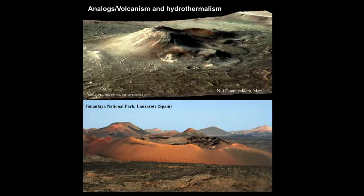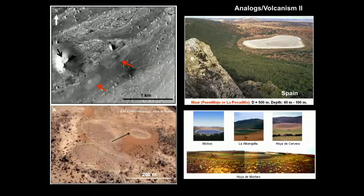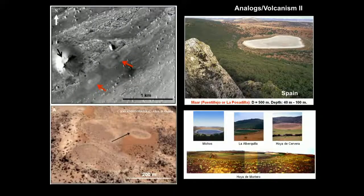Let me show some connections with regards to different possibilities of analogs. For example, volcanism and hydrothermalism: the Nili Patera caldera on Mars, where there are mineralizing hydrothermal deposits, has a similar structure to El Corazoncito — 'the little heart' — in Lanzarote. We also have maars — structures related with hydrovolcanic processes — for example in the Calatrava volcanic field in Spain, and similar structures have been identified in Australia and on Mars.